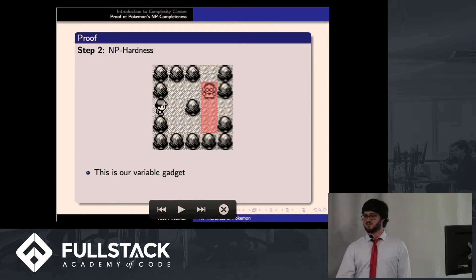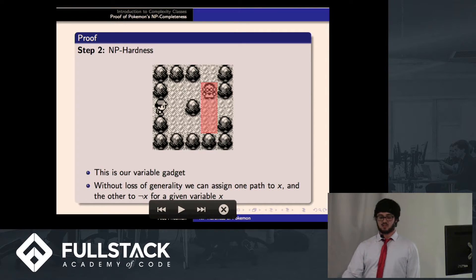So this is our variable gadget. We have one trainer on the screen, an easy trainer. It doesn't matter which path of the two on the right-hand side we assign to true or false, just that one is true and one is false. One is X and one is not X. So if we were to walk down to the bottom right corner of the screen, the trainer would walk down and battle us, which would open the top door in that gadget. If we were to walk up to the right and talk to the trainer from his left-hand side, it would open up the gadget on the right-hand side.